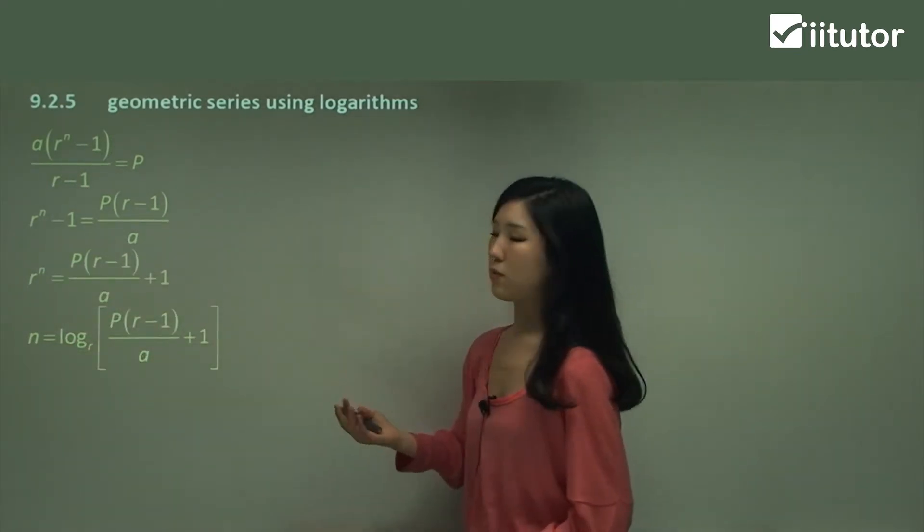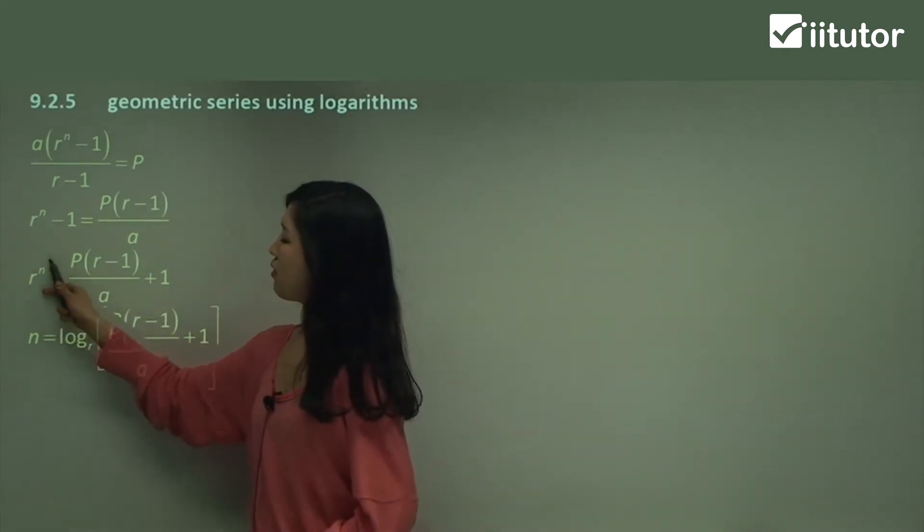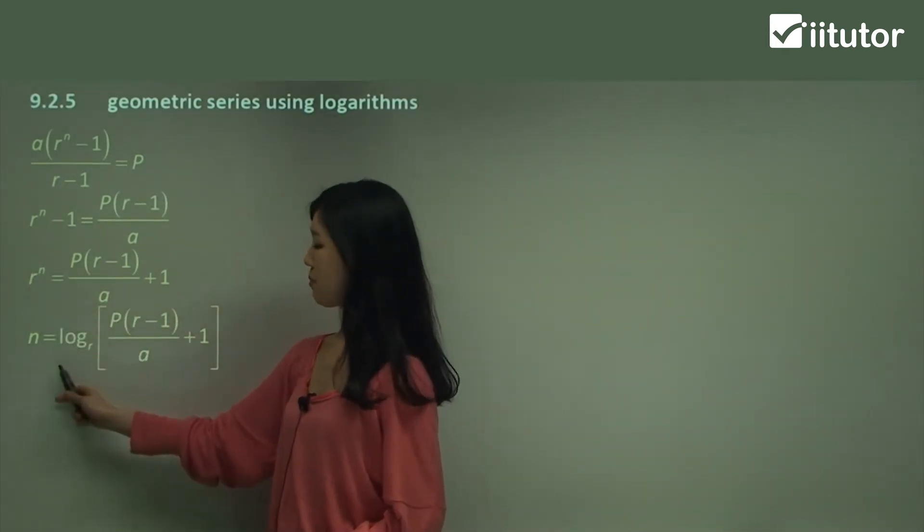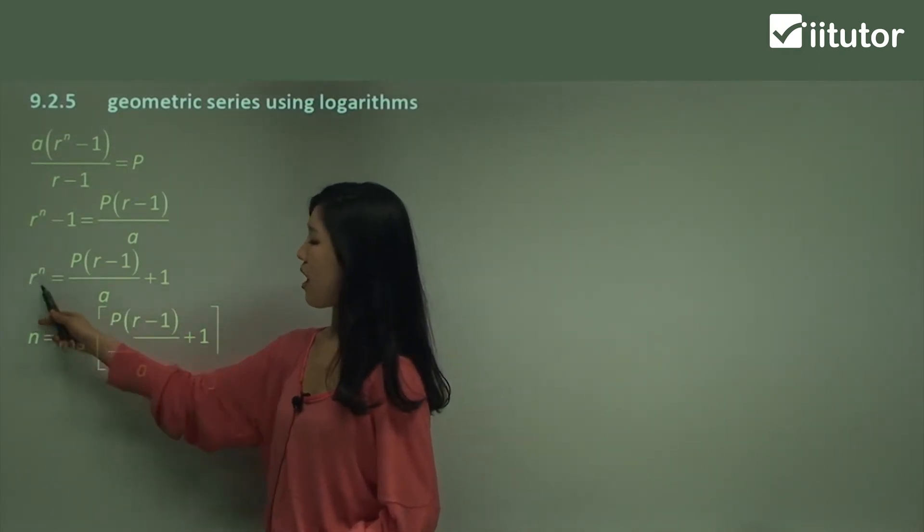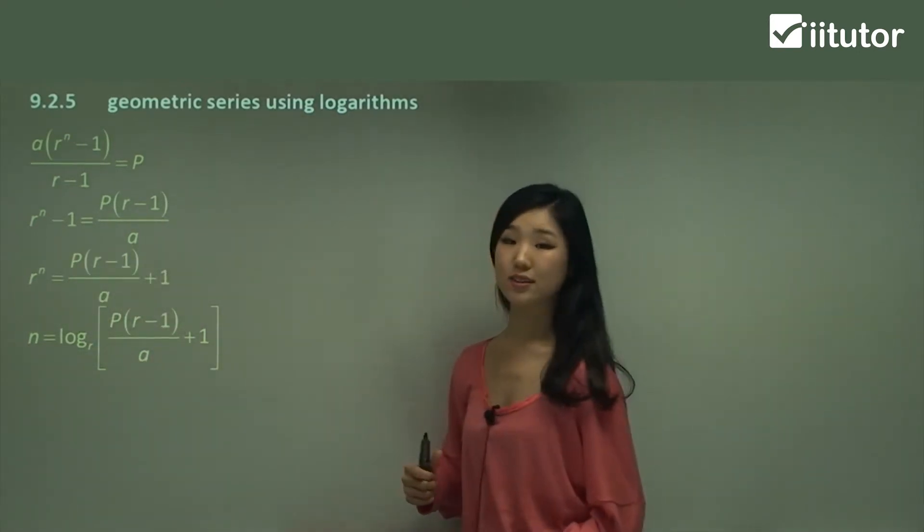Now this is the stage when we're using the log rule. Remember, we want to solve for n, then n becomes the subject and that's equal to log. The r goes down as the base and then this whole thing goes after the log.